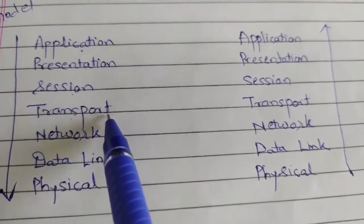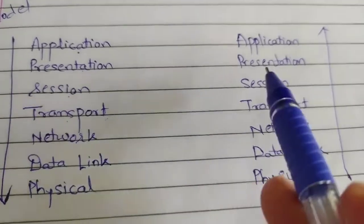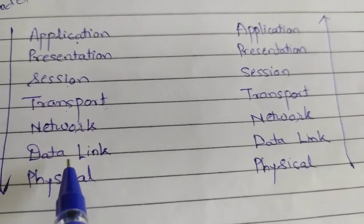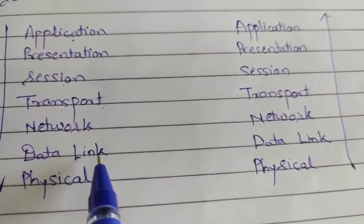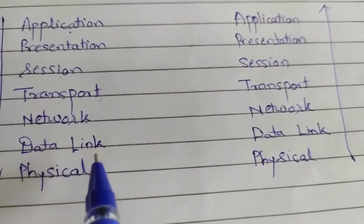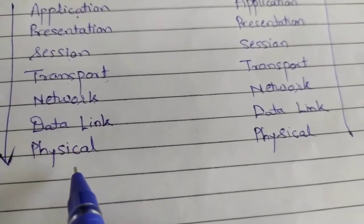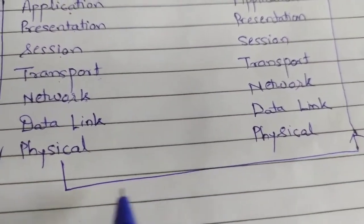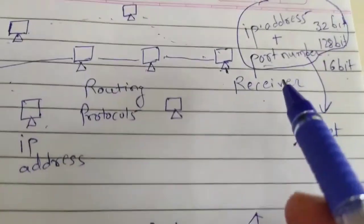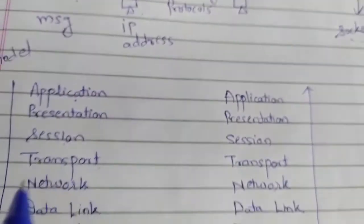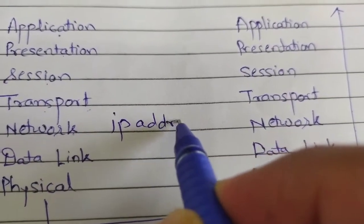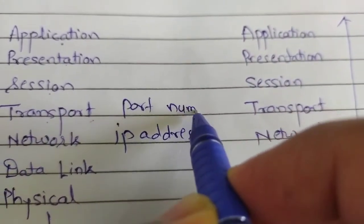The transport layer is about transporting the data segments. The network layer is for managing the network. The data link layer is for sending data frames and also handles error recovery and flow control. The physical layer deals with functions directly linked with the communication media. From the socket, the IP address is linked with the network layer, while the port number is linked with the transport layer.